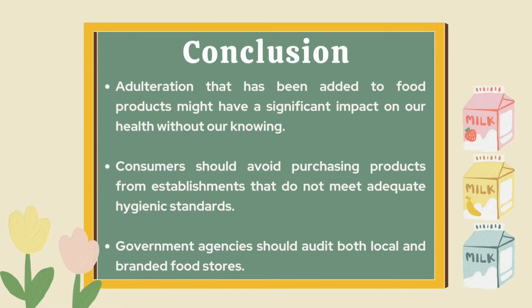In conclusion, adulteration added to food products might have a significant impact on our health without our knowing. Adulteration can be avoided if our community takes precautionary measures. Consumers should avoid purchasing products from establishments that do not meet adequate hygienic standards, and government agencies should audit both local and branded food stores. This study aims to raise public awareness regarding malpractice or neglect in milk production, especially in nations like India where milk and milk derivatives play an important role in a variety of meals. That's all from our group. Thank you for listening.